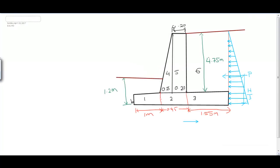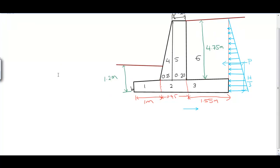Now we perform the stability check for 1 meter running length of the wall. The wall is divided into various parts to calculate loads and their points of application from the toe (point B). Results are tabulated: load W, distance from toe, and moment about toe. Loads from structural elements create clockwise (stabilizing) moments; active earth pressure creates anti-clockwise (overturning) moments.